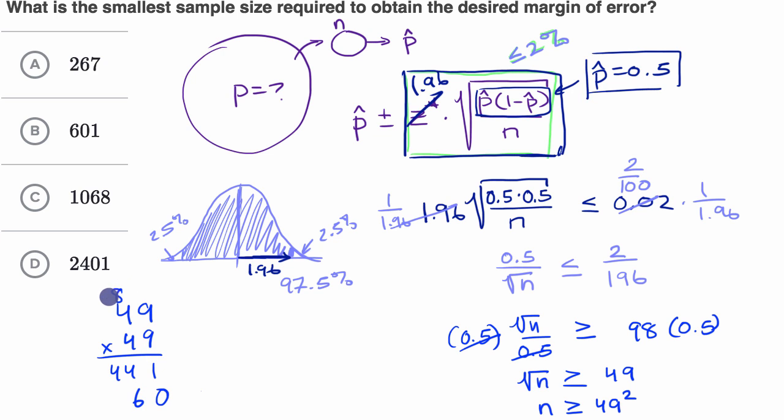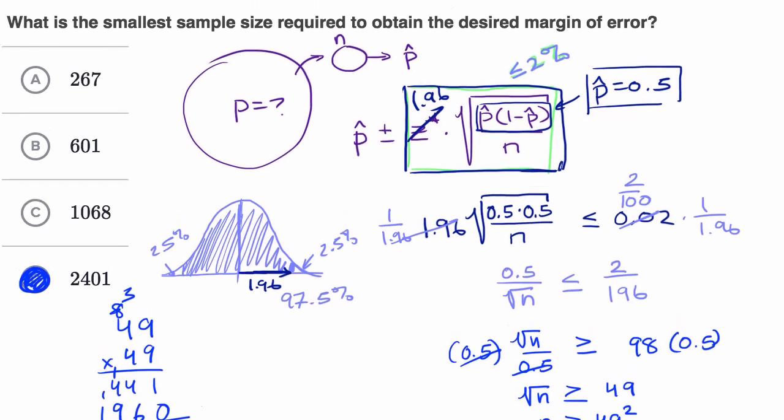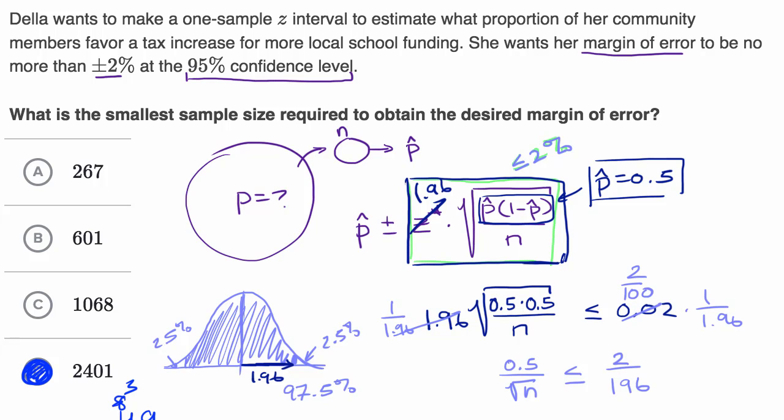9 times 4 is 36, plus 8 is 44. 4 times 9 is 36. 4 times 4 is 16, plus 3 is 19. You add all of that together and you indeed do get 2,401. So that's the minimum sample size that Della should take if she genuinely wanted her margin of error to be no more than 2%.